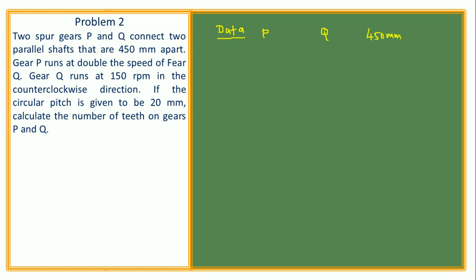Gear P and gear Q are parallel and 450 mm apart. NP equals twice NQ. NQ is 150 RPM, so NP is 300 RPM. The circular pitch PC is equal to 20 mm. We want to calculate the teeth on P and teeth on Q.